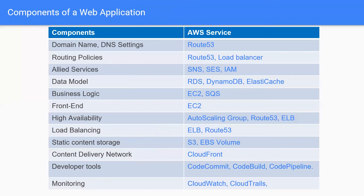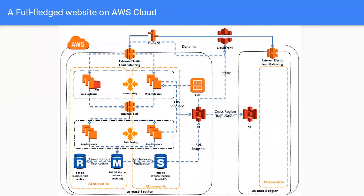Please note that whatever we are talking about here — the web application components and services — these are still the very basic services. AWS also provides advanced web services like Elastic Beanstalk, OpsWorks, Lightsail, and many others which you can use instead. But since we are beginning to understand AWS services, we are taking a conservative approach. A normal web application has three tiers: the web tier, the application tier, and the data tier.